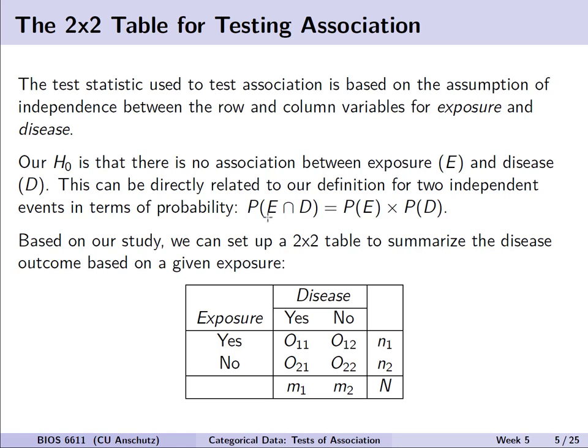This can be directly related to our definition for two independent events in terms of their probability. If we say exposure is E and disease is D, they are independent if and only if the probability of E times the probability of D equals the joint probability of E and D. Based on our study, we can set up a 2x2 table with exposure and disease outcomes. For the chi-squared test we work with the observed counts per cell: O11 is the first cell in the first row and first column, and we define that for each combination of exposure and disease, with row totals N1 and column totals M1 and M2.